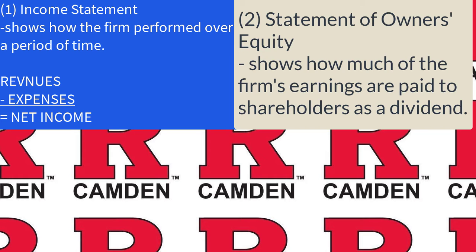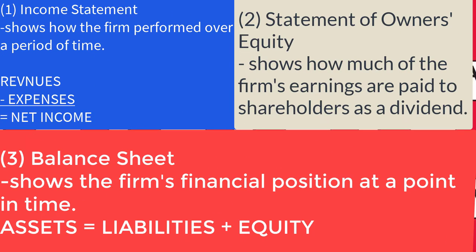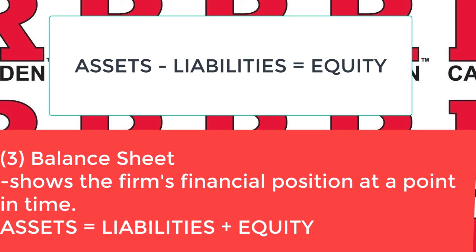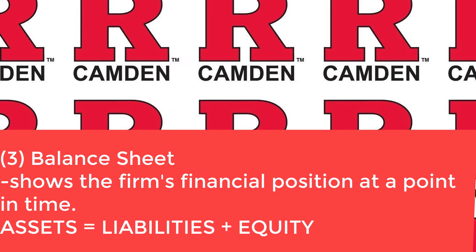The third financial statement is very important — it's called the balance sheet. The balance sheet shows a company's financial position at a point in time. There are really three elements: assets equal liabilities plus equity. If you rearrange the equation, assets minus liabilities equals equity. So we're saying everything I own minus all that I owe other people equals equity, or net worth. It's called the balance sheet because it always balances — there is never a point in time that it does not equal, ever.